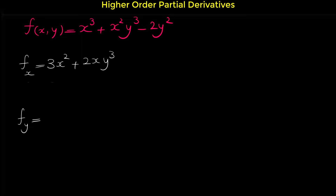Now let's find f sub y, the derivative of this function with respect to y. The derivative of x cubed with respect to y is 0, because x cubed is a constant when we take the derivative with respect to y.